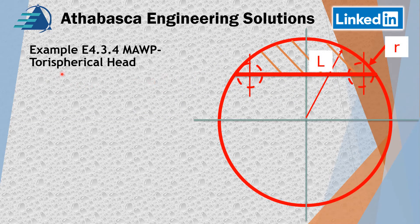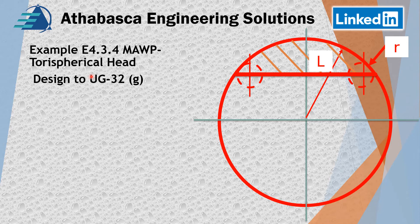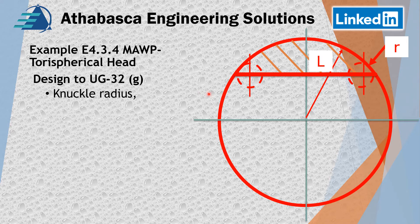Let's discuss a little more about the torospherical head because there's some confusion. ASME PTB-4 allows some latitude on the design, but in most cases I recommend you just follow the PTB-4 definition of the torospherical head. There are comments in UG-32G about the knuckle radius — this part here is what I drew for this torospherical head. Outside there is the shell, and basically you have the small knuckle radius and L, the crown radius.